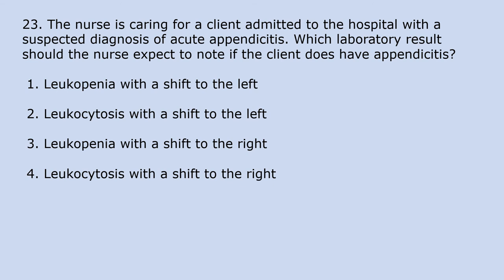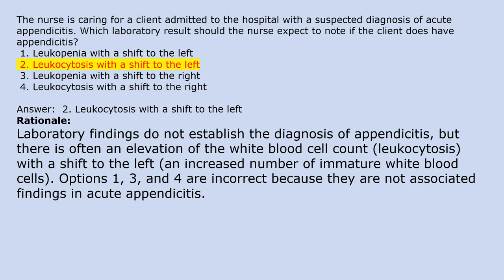A client is admitted with a suspected diagnosis of acute appendicitis. Which laboratory results should the nurse expect to note? 1. Leukopenia with a shift to the left. 2. Leukocytosis with a shift to the left. 3. Leukopenia with a shift to the right. 4. Leukocytosis with a shift to the right. Answer 2. Leukocytosis with a shift to the left. Rationale: Laboratory findings do not establish the diagnosis of appendicitis, but there is often an elevation of the white blood cell count — leukocytosis with a shift to the left, meaning an increased number of immature white blood cells. Options 1, 3, and 4 are incorrect as they are not associated findings in acute appendicitis.